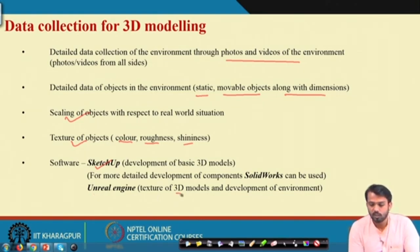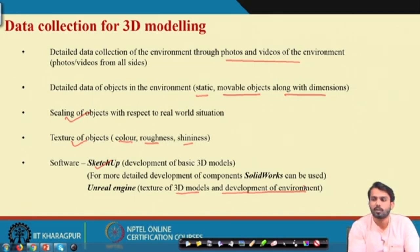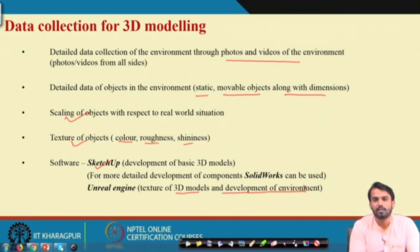Unreal Engine is used for the texturing of 3D models and development of virtual environments. Apart from photos and videos captured as data sources for 3D modeling, we can now use a 3D laser scanner — a very advanced equipment used for collecting data in complicated shapes or complex environments. You just place this 3D laser scanner in the workplace and it will automatically scan the workplace by rotating 360 degrees, giving output in the form of point clouds.